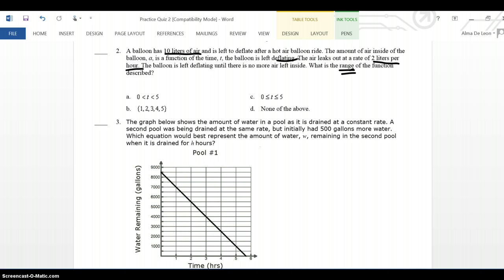So, after 1 hour, I'm going to make a little table. After 1 hour, I know that the balloon is only going to have 8 liters left, right? And after 2 hours, I know that the balloon is only going to have 6 liters of air left. How do I know that? How do I get 8? Well, all I did was I took 10, which is the amount of air inside the balloon at the moment, and I subtracted 2 from it.